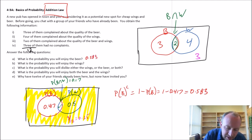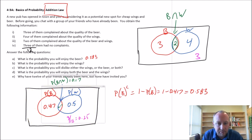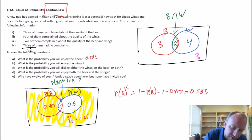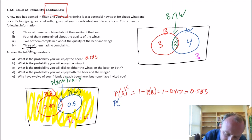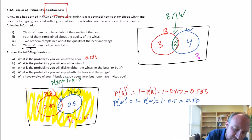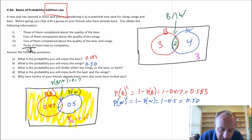What's the probability I'll enjoy the wings? The blue circle represents the probability of not enjoying the wings, so the probability of enjoying them is everything outside that circle — again, the complement. So it's 1 minus the probability of disliking the wings: 1 minus 0.5 equals 0.5. There's a 0.5 probability of enjoying the wings and a 0.5 probability of disliking them.